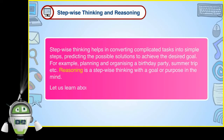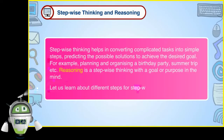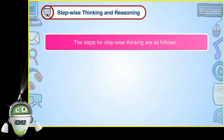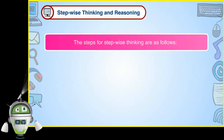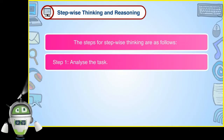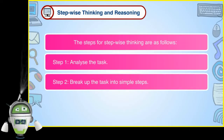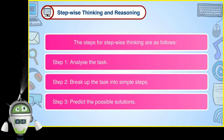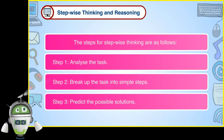Let us learn about different steps for stepwise thinking. The steps are as follows: Step 1 — Analyze the task. Step 2 — Break up the task into simple steps. Step 3 — Predict the possible solutions.